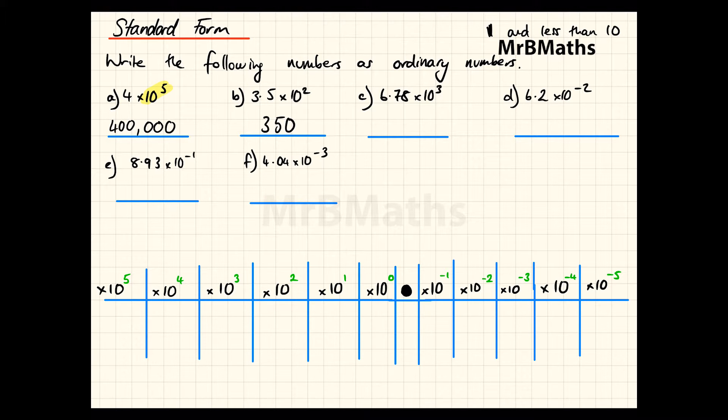Let me do the same for C. So 6.78 times 10 to the three, I find times 10 to the three, I then write 6, 7, 8, and write a zero there. So 6.78 times 10 to the three as an ordinary number is 6,780.